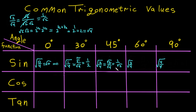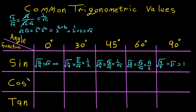For the next value, we have square root of 3 over square root of 4, which is square root of 3 over 2. And finally, 4 over 4 equals 1, and square root of 1 equals 1. So the sine values are complete.